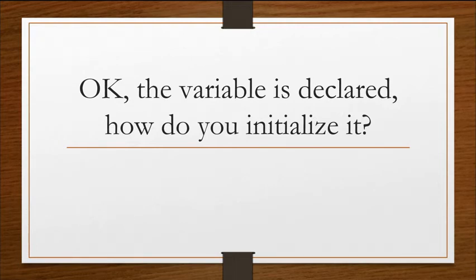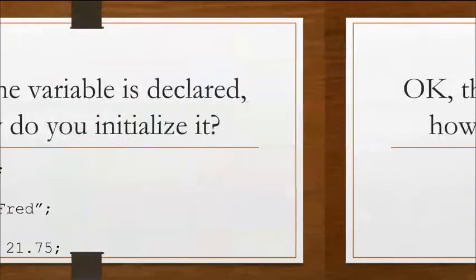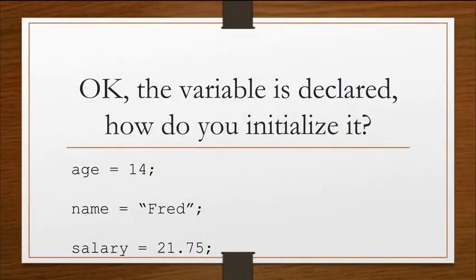Okay, the variable is declared. How do you initialize it? Well, to initialize a variable means that you're assigning it its very first value. If you don't assign it a value, it has no value and therefore it's not useful. So here's some examples. You can take age once it's been declared and assign it the value of 14. So we say age equals 14, name equals Fred, salary equals 21.75. Notice that all statements in Java are finished with a semicolon.